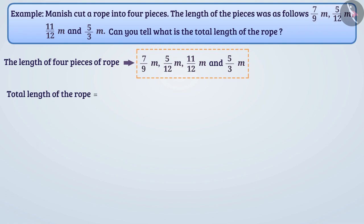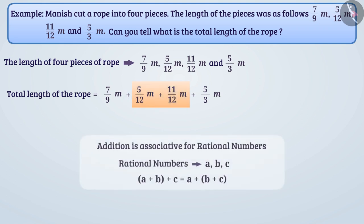Total length of rope is equal to 7/9 meter plus 5/12 meter plus 11/12 meter plus 5/3 meter. Here we see that denominators of 5/12 and 11/12 are equal. So it is easy to add them. Since the addition is associative for rational numbers,